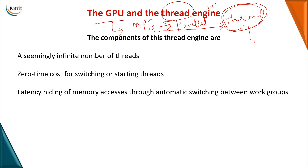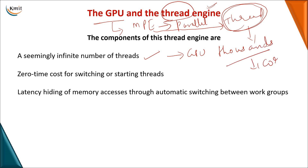The thread engine must support a large number of threads because a GPU has thousands of cores — nowadays even hundreds of thousands of cores. All these cores have to operate in parallel, so you need thousands of threads. In order to manage these thousands of threads, you need a thread engine.